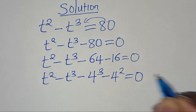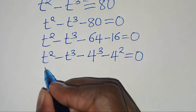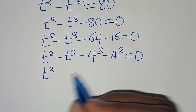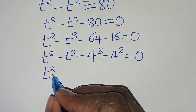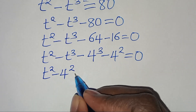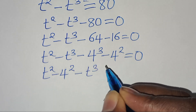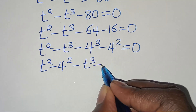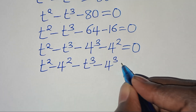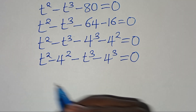We can express 64 as 4 to the power of 3 and 16 as 4 to the power of 2. This gives us t squared minus 4 squared, then subtract t to the power of 3, then subtract 4 to the power of 3, all equal to 0.